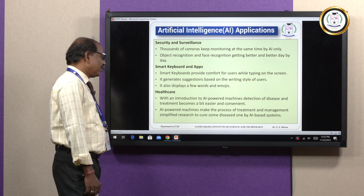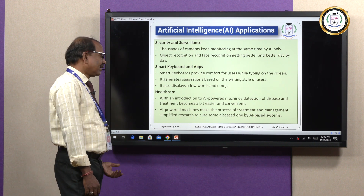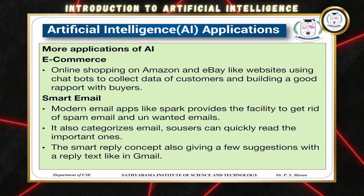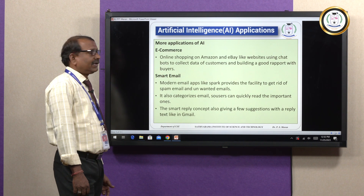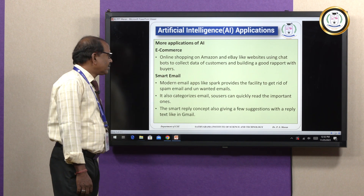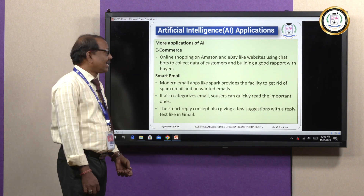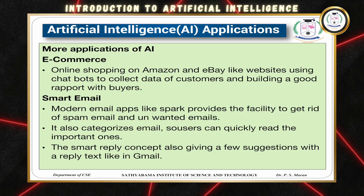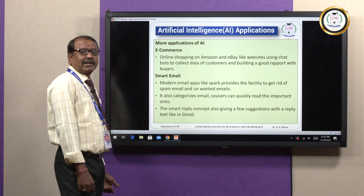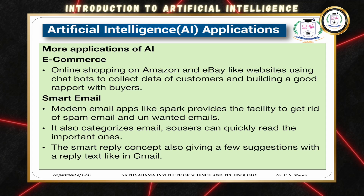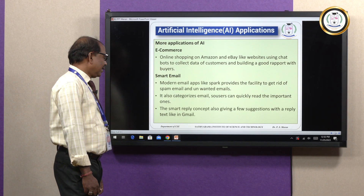AI-powered machines make the process of treatment manageable in health sciences, and research is done to cure disease using AI-based systems. For e-commerce, online shopping on Amazon, Flipkart and eBay uses websites where data is collected from customers for building good support for buyers. For smart email, spam detection allows unwanted emails to be detected by artificial intelligence techniques, and it also categorizes the sources from which email spam comes.